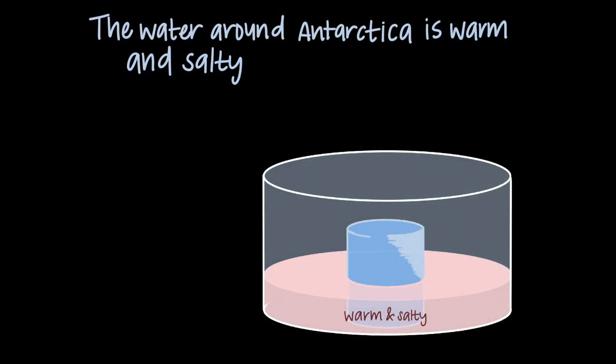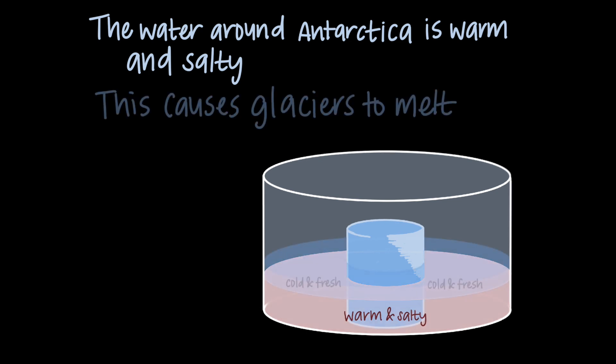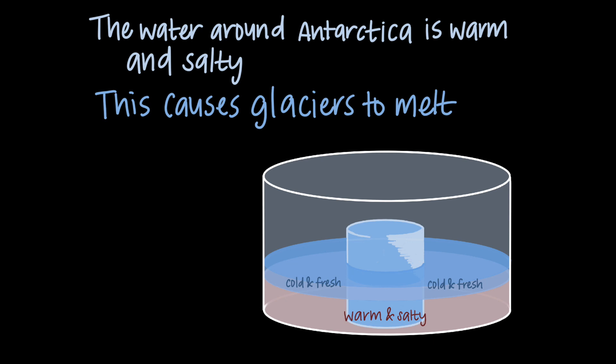We've learned that the water around Antarctica is warm and salty. This is relatively normal for the ocean in that region. This warm, salty water also causes glaciers to melt. And in normal conditions, the melted glaciers are replaced by more snow at the surface to form more glaciers.